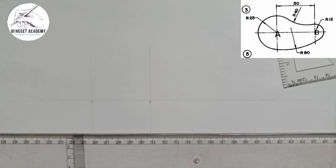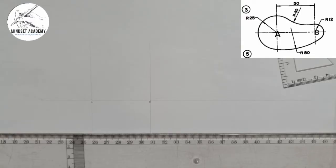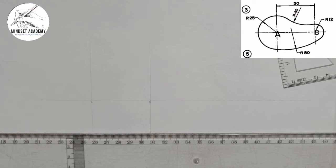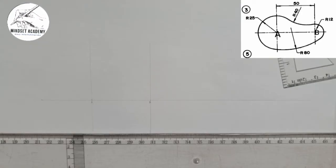If you look closely at this figure, we have four radii: the radius of 25, the radius of 12, the radius of 80, and the radius of 40. Since we know the centers, whenever there is a radius it means there is an arc, a curve, or a circle. So we will start with the radii of 25 and 12 first.